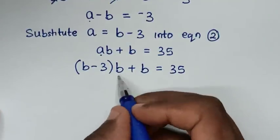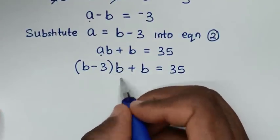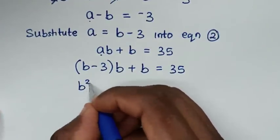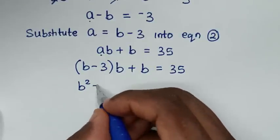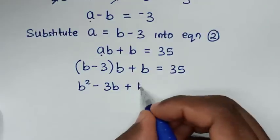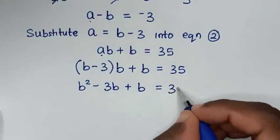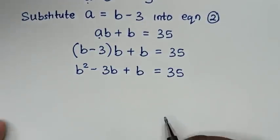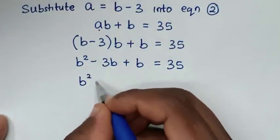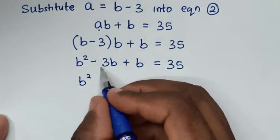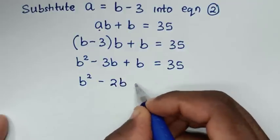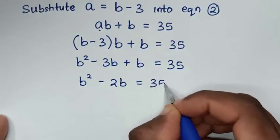We'll expand the bracket by multiplying by B. So B times B is B squared, B times negative 3 is negative 3B, plus B, equals 35. Combining like terms, B squared minus 3B plus B gives B squared minus 2B equals 35.